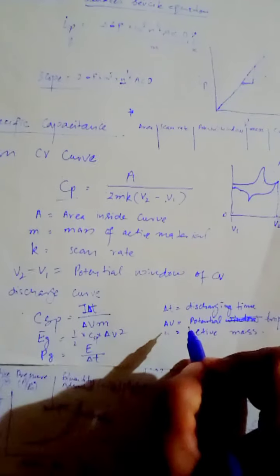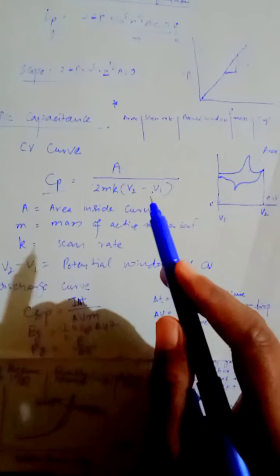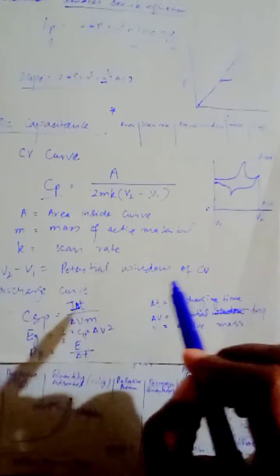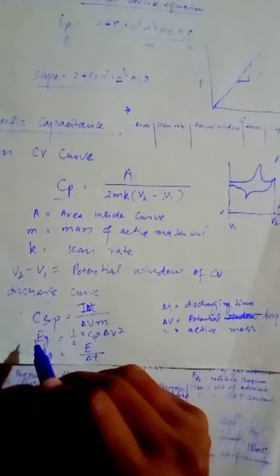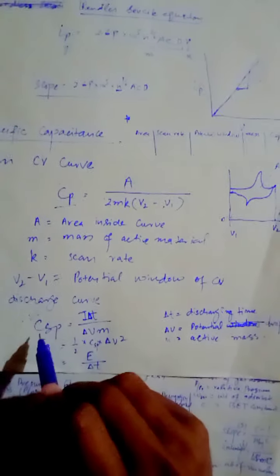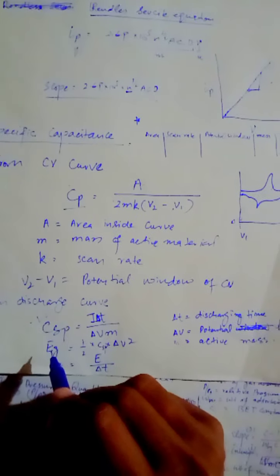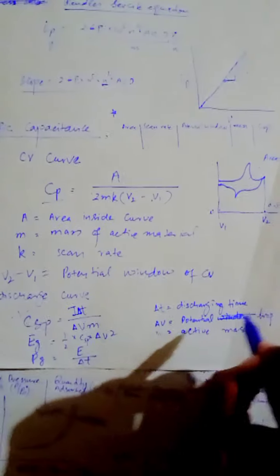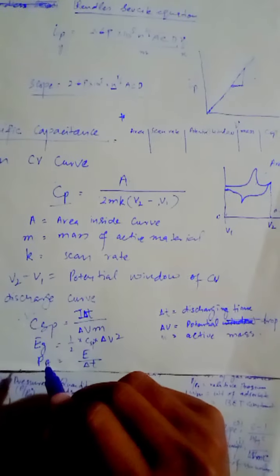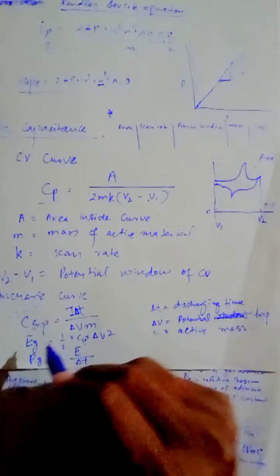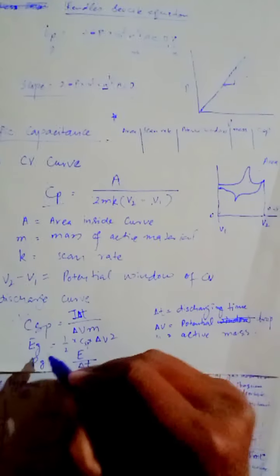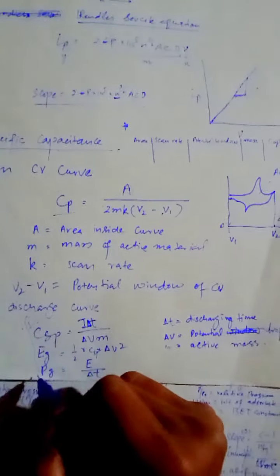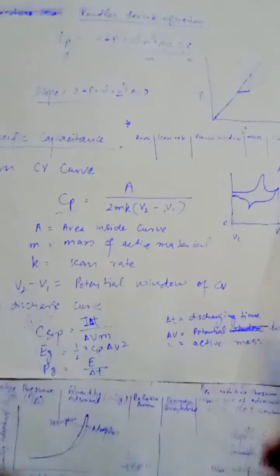m جو ہے active mass ہے۔ ΔV جو ہے potential drop ہے — جہاں سے potential کم ہونا شروع ہو جائے، یہ decrease ہونا شروع ہو جائے، اس drop کو ΔV بولتے ہیں۔ جب یہ تینوں values معلوم ہوں تو ہم specific capacitance، energy density اور power density find کر سکتے ہیں۔